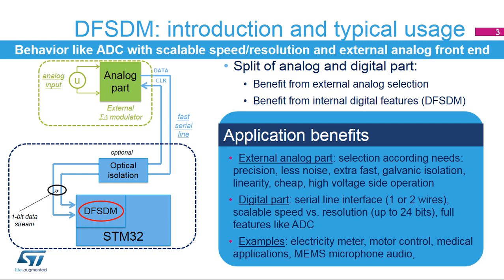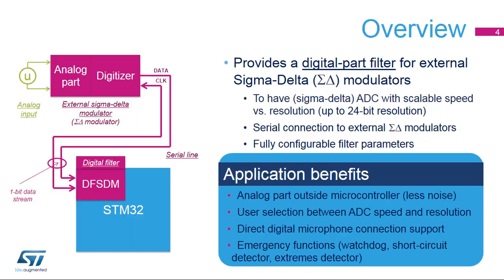The DF-SDM is able to process external serial data and also internal parallel 16-bit data transfer provided by the CPU or DMA from memory. The DF-SDM was developed due to a need for a sigma-delta ADC with scalable speed versus resolution. More than 16-bit accuracy inside a microcontroller is a problem because of noise from the digital part. The solution is to move the analog part outside the microcontroller. The speed versus resolution ratio setting is a task for the internal digital filter in hardware. Although it behaves like a complete analog-to-digital converter, the DF-SDM is purely digital with its analog part outside the microcontroller.